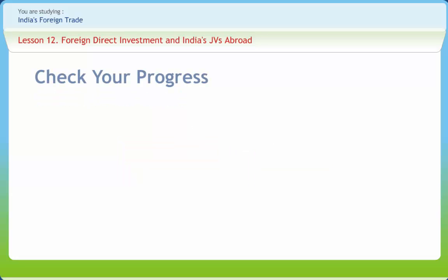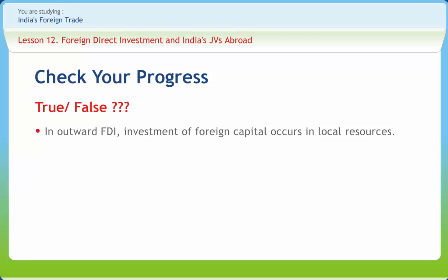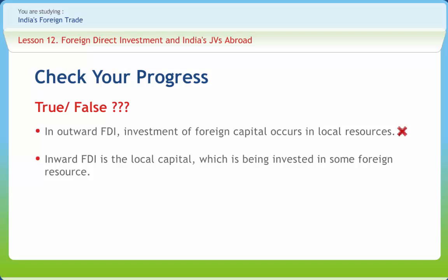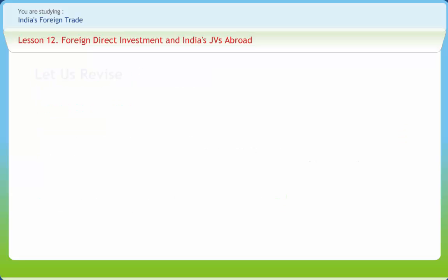Let us check if we have understood the various concepts discussed in this lesson. In outward FDI, investment of foreign capital occurs in local resources — right or wrong? Wrong. Inward FDI is the local capital which is being invested in some foreign resource — right or wrong? Wrong. The abbreviation JV stands for joint ventures — right or wrong? Right.